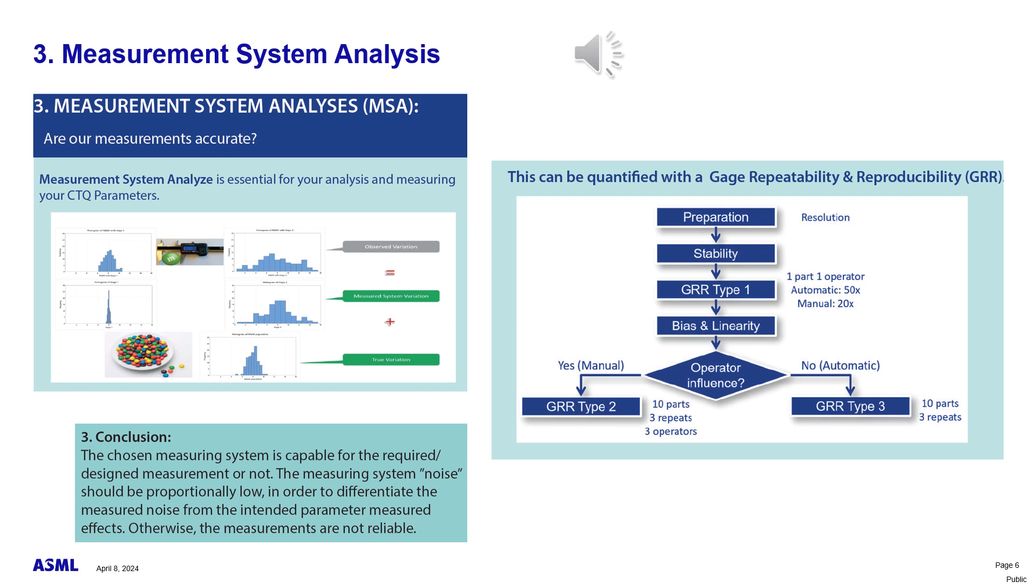In every measurement dataset, there is a certain variation. With MSA methodology, it is possible to quantify how much of this variation is coming from the measurement system. The most common way to quantify the measurement variation is conducting a gauge repeatability and reproducibility, in short, gauge R&R study. The correct type is selected based on the measurement procedure and the variation is quantified in proportion to the spec limits.